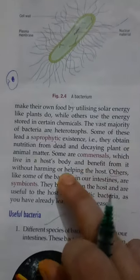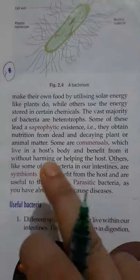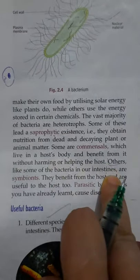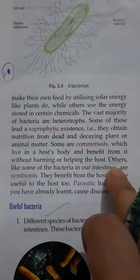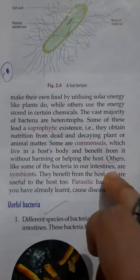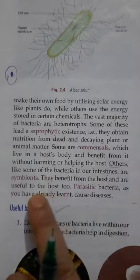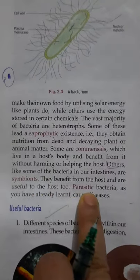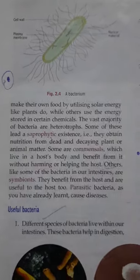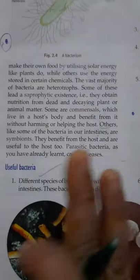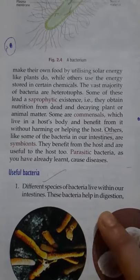Some are commensals, meaning they live inside the host body and benefit from it without harming it. Others are symbiotic — for example, the bacteria living inside our intestine are good for us and release enzymes that help in the synthesis of vitamins. Some bacteria are parasitic, meaning they can harm us and cause diseases in humans, animals, and even plants.